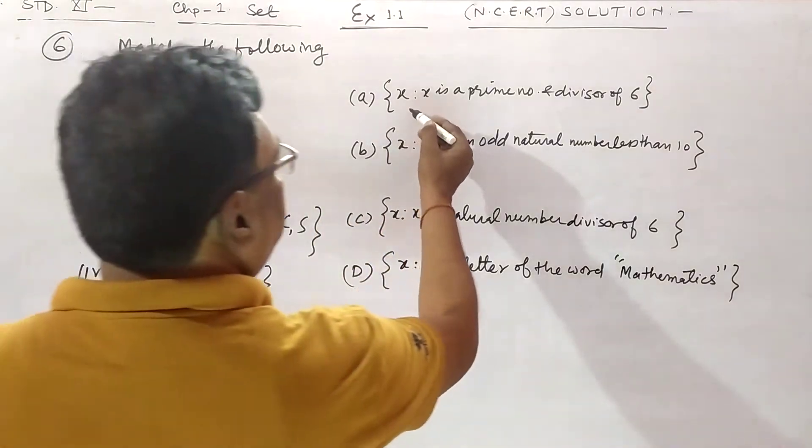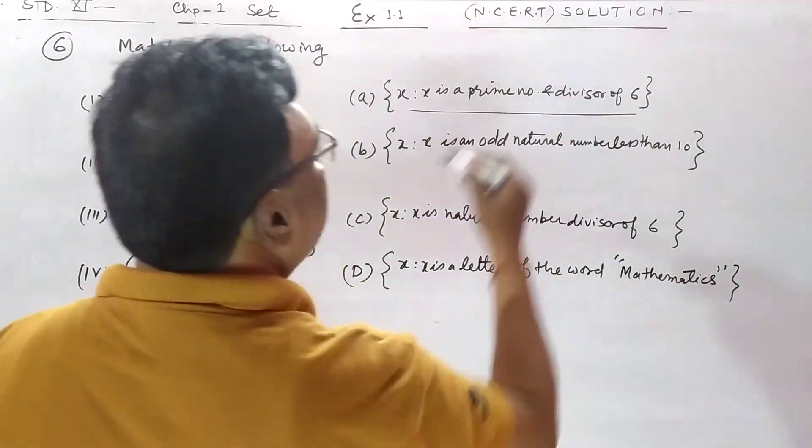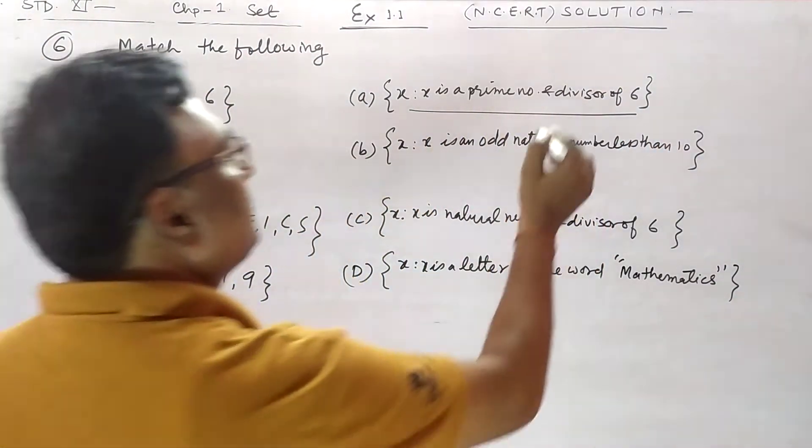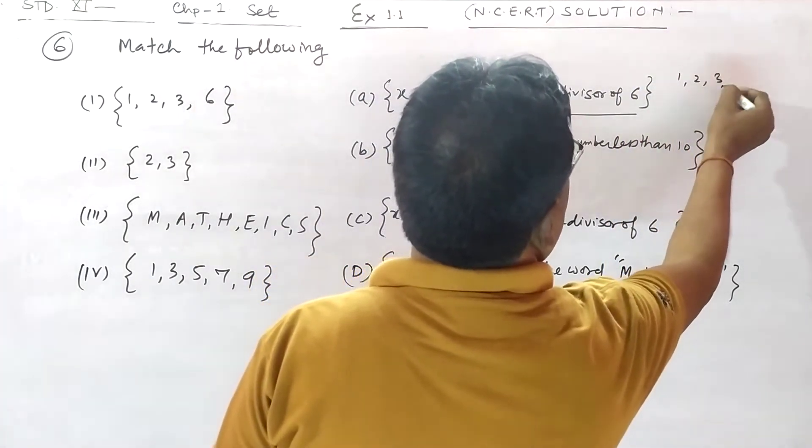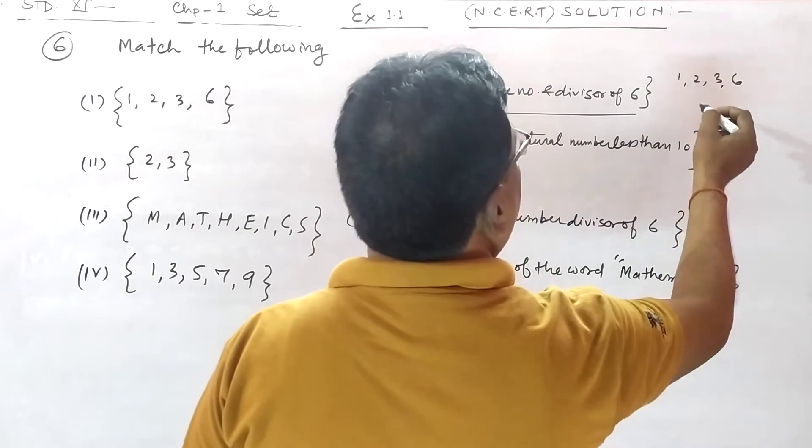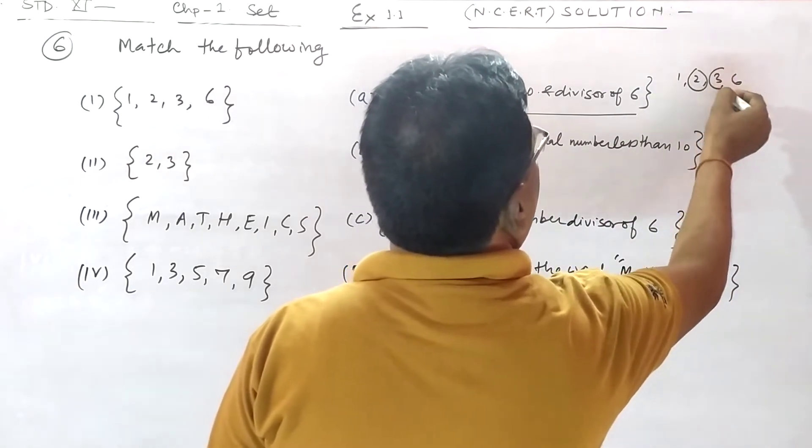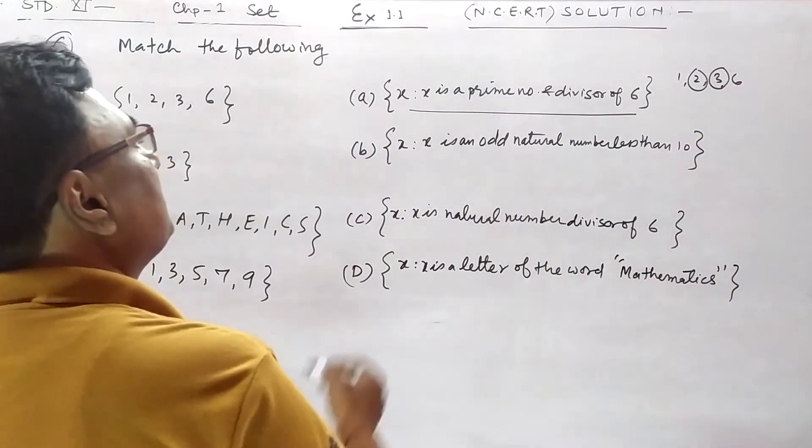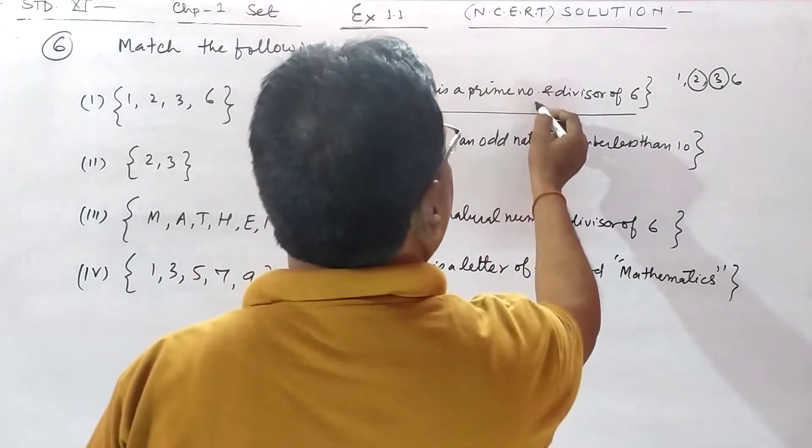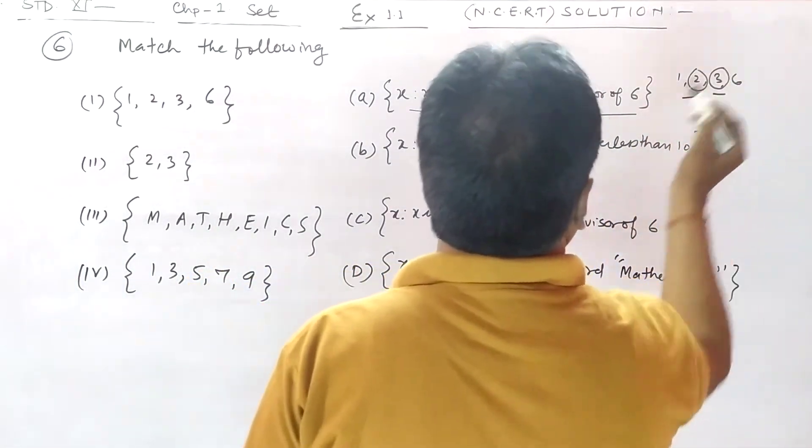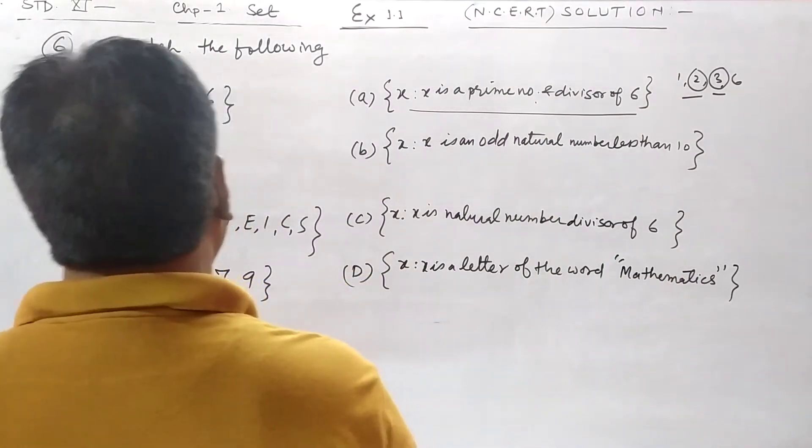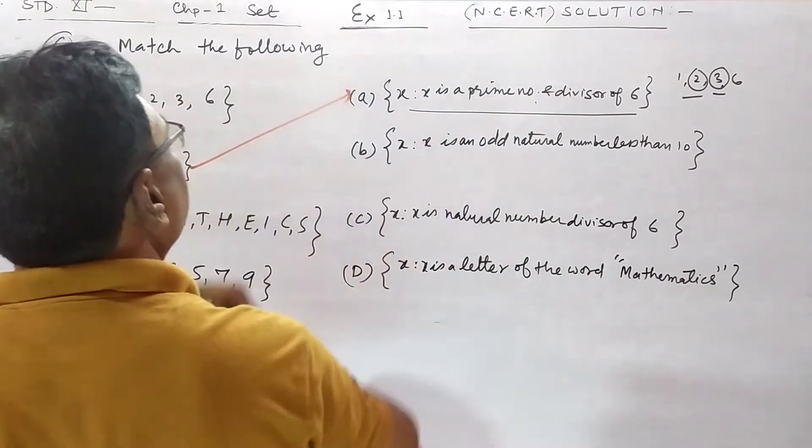X is a prime number divisor of six. Divisors of six are one, two, three, and six. Also prime numbers are two and three. So x is a prime number and divisor of six: two and three. One, two, and three. It means this one.